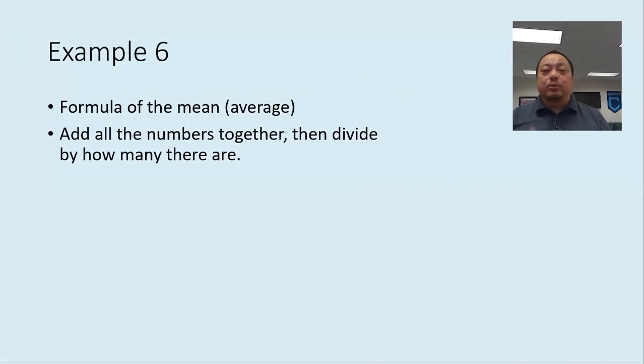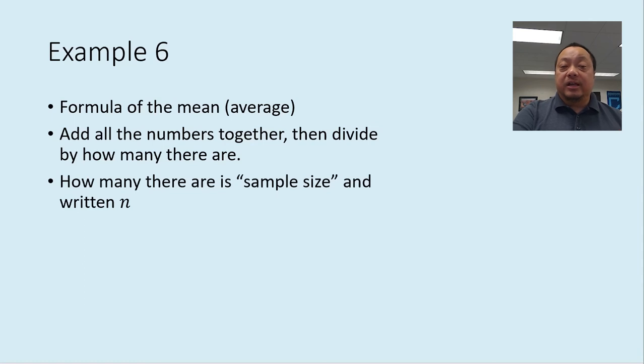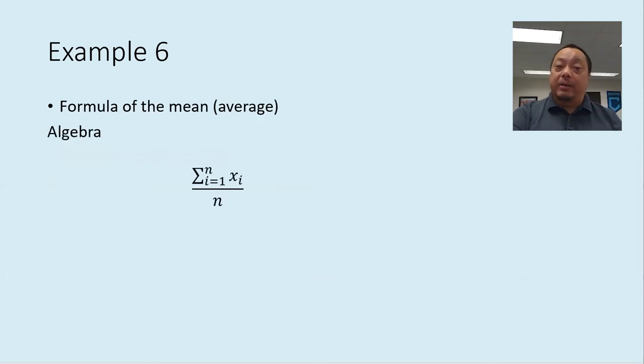Here's another example. Let's say we want to write the formula for the mean or average of several numbers. To compute the mean, we add all the numbers together and then divide by how many there are, right? How many there are is called the sample size and is written with the letter n. In algebra, we would write the formula like this. Add all the x sub i together from the first where i equals 1 to the last where i equals n. Then divide by n. That's the formula in algebra, very precise, no ambiguity. In statistics, we would skip the indices and just write like this. A lot more convenient.